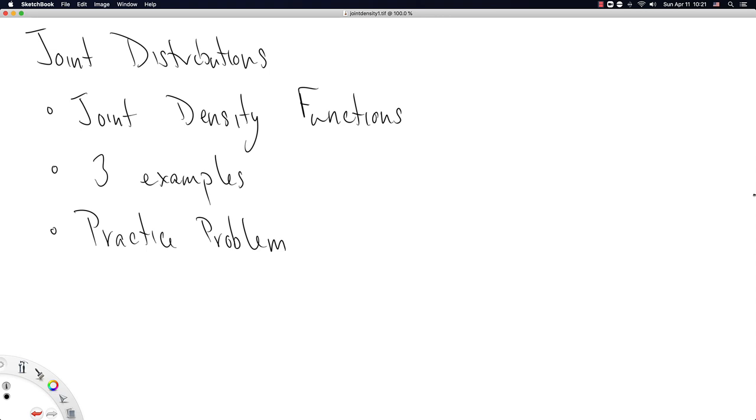So imagine two random occurrences taking place, but you're measuring the two as one unit. So we'll look at some joint density functions since we have been focusing on defining distributions relative to their density functions.